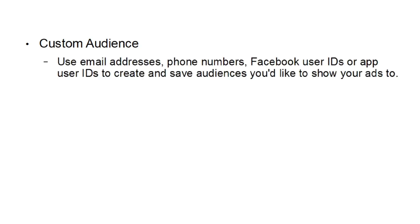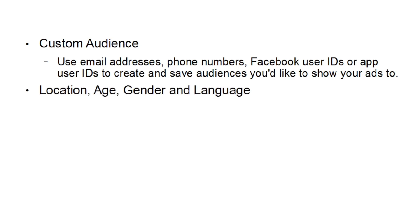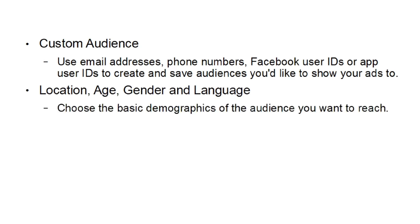Let's look at the different targeting options that Facebook has, because they do have quite a few. The sort of targeting option you're going to choose is largely going to be dependent on what your product or service is. You can create a custom audience if you want — you can use email addresses, phone numbers, Facebook user IDs, or app user IDs to create and save audiences that you'd like to show your ads to, so only people you specifically selected will get to see your ad. You can also choose by location, age, gender, and language — the most basic demographics of the audience you want to reach.